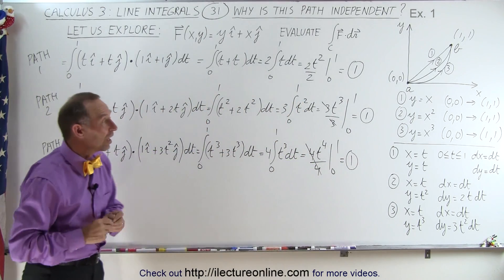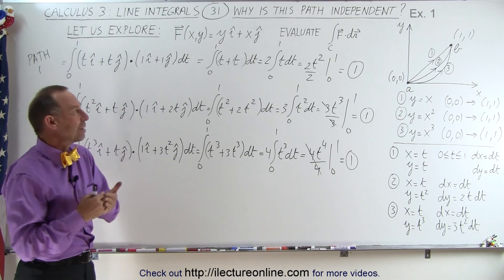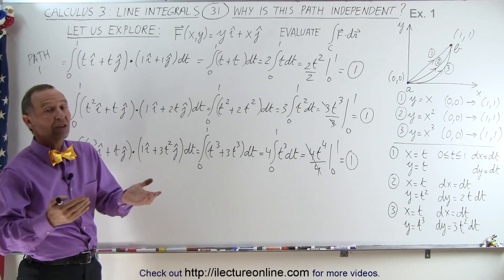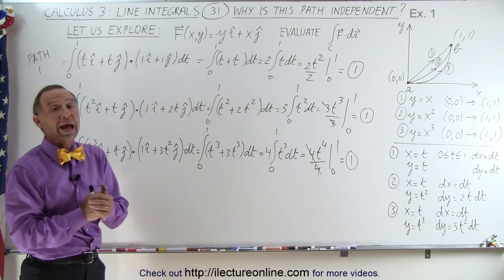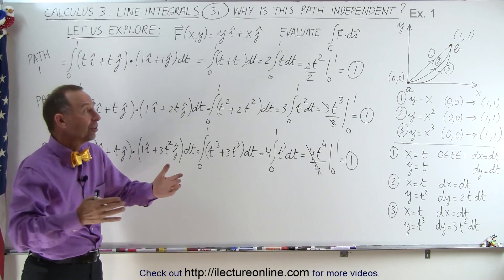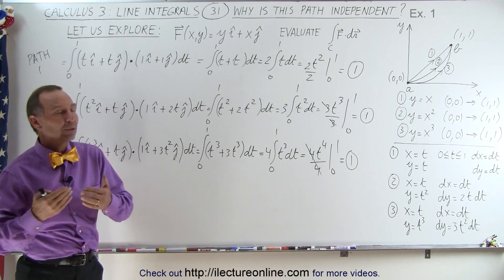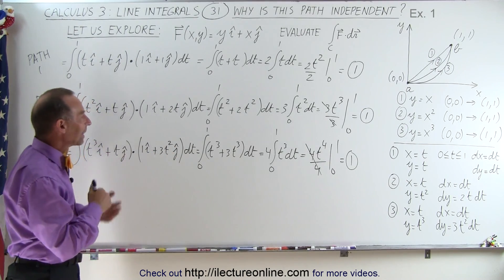So you can see that in this case all three paths give us the very same result for that particular line integral. And so we can say that at least for those three paths and presumably for all paths going from a to b we're going to get the same result. Therefore the integral, the line integral, is path independent.